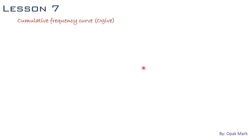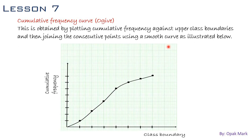Hello, welcome to lesson 7. This is going to be our last lesson in this course. In this lesson we are going to look at the cumulative frequency curve, or the ogive. The ogive is obtained by plotting cumulative frequency against the class boundaries, that is the upper class boundaries, and then joining the consecutive points plotted using a smooth curve. We usually use a freehand to draw the curve.